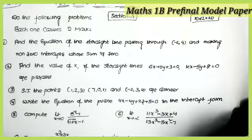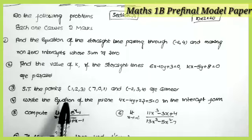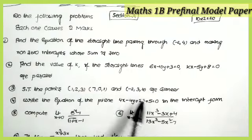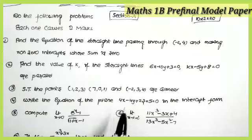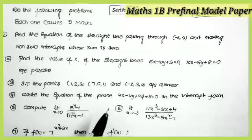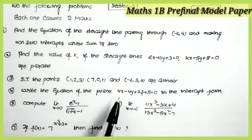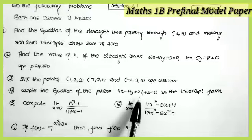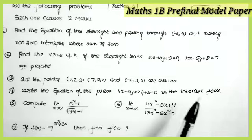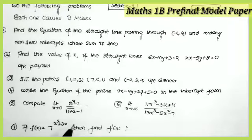The third question is from the topic Three-Dimensional Coordinates: show that the points (1, 2, 3), (7, 0, 1), and (−2, 3, 4) are collinear — a very easy and important model. The fourth question is from the topic Plane: write the equation of the plane 4x − 4y + 2z + 5 = 0 in the intercept form, also a very important model.